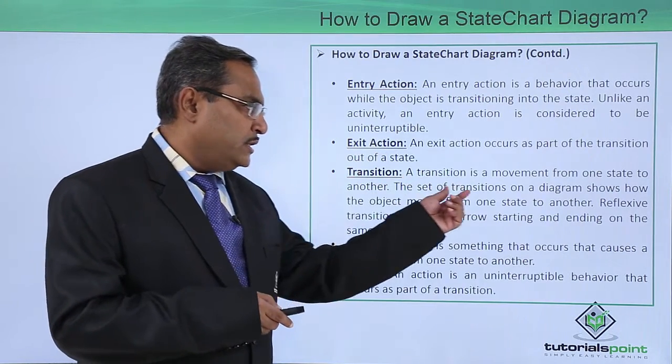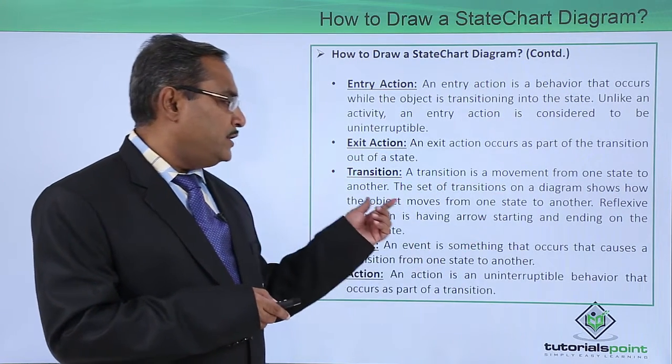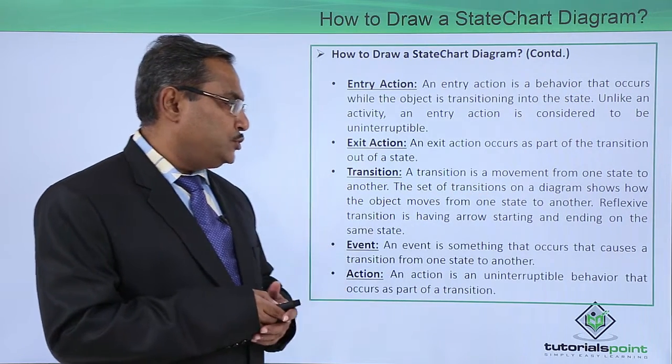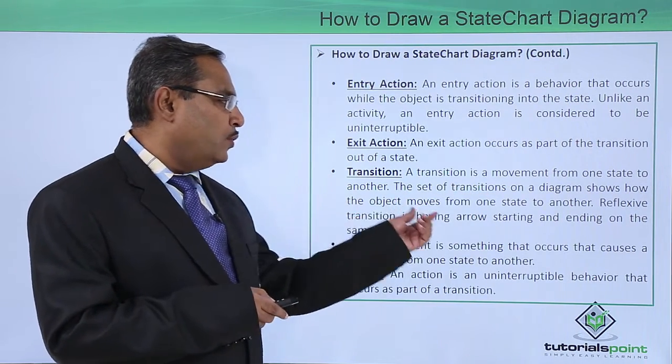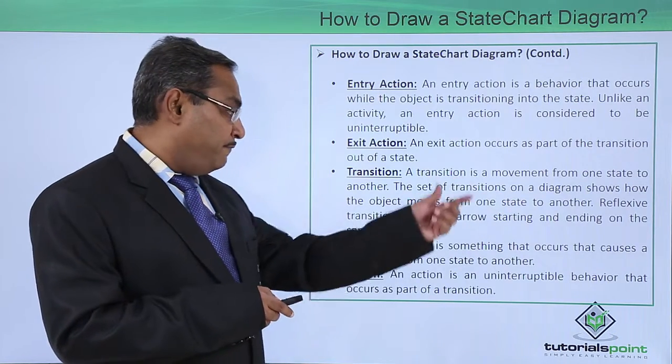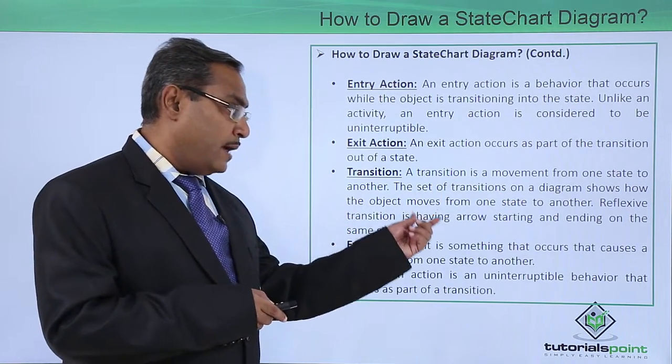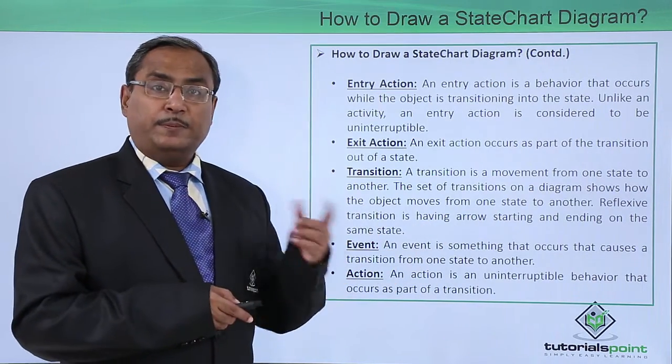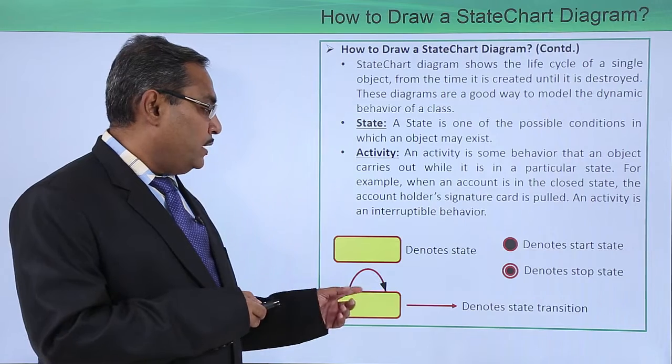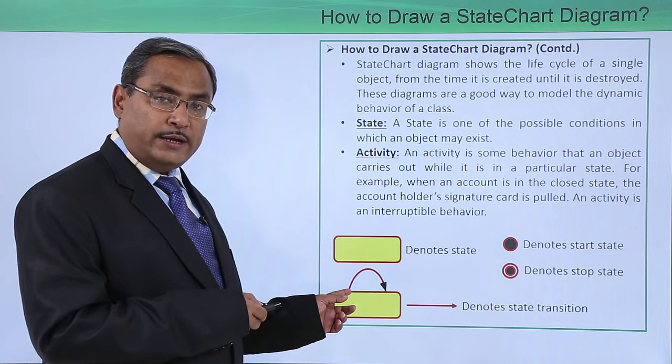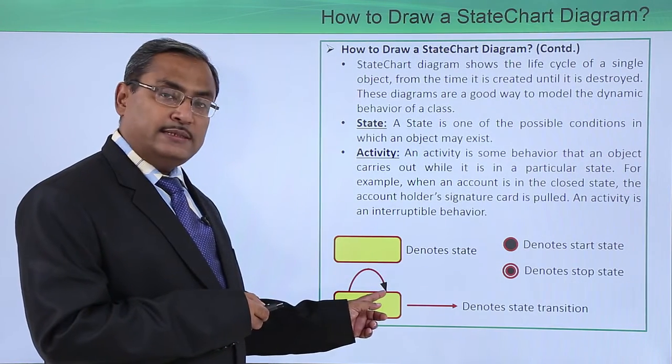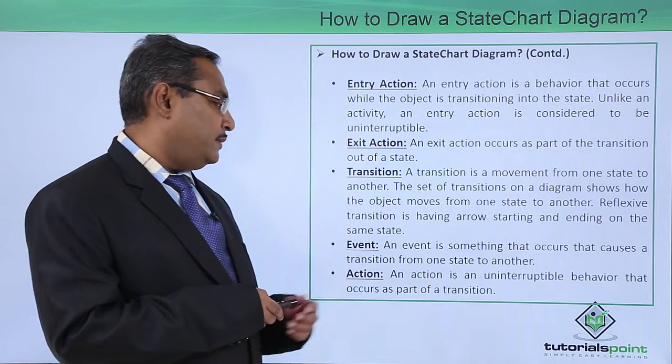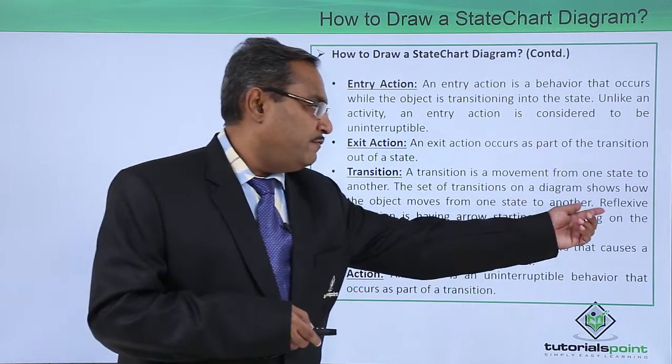Transition. A transition is a movement from one state to another. The set of transitions on a diagram shows how the object moves from one state to another. And the reflexive transition is having arrow starting and ending on the same state. In the previous diagram, we discussed that whenever one arrowhead is starting and ending at the same state, it can be considered as one reflexive transition.